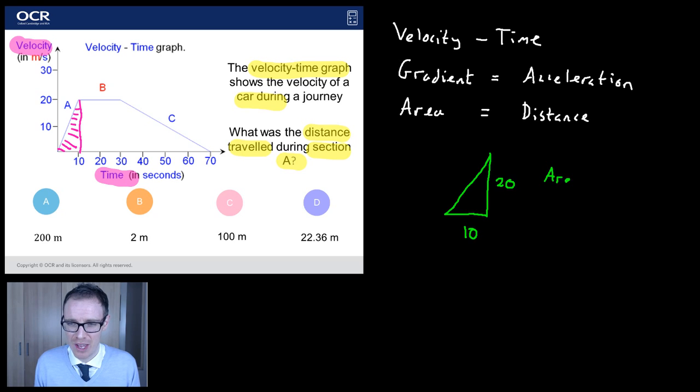Well, it goes up to 20. So the height of my triangle is 20. How do I work out the area of a triangle? Please don't mess this up. It's my base, which is 10, multiplied by my height, which is 20. What do I need to do?